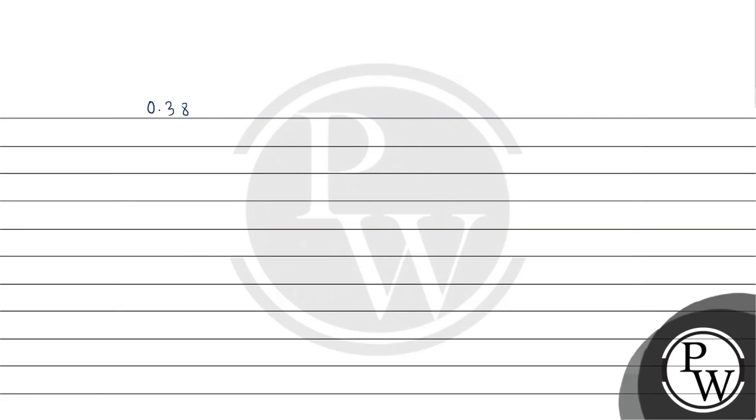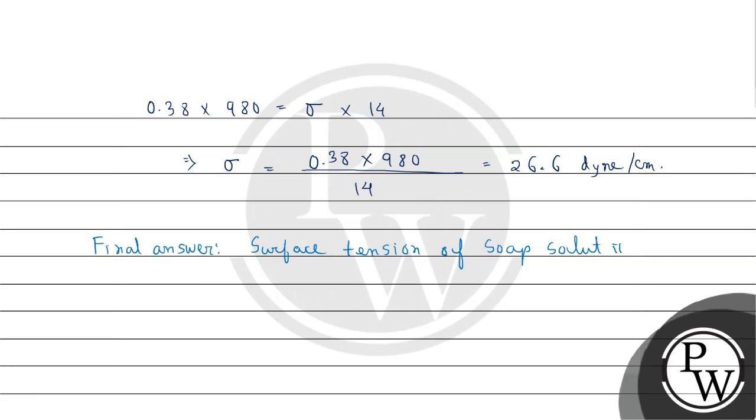So now using the above formula here we can write the value of force is 0.38 multiplied by 980 equals to sigma multiplied by 14. Therefore solving we get the value of surface tension sigma equals to 0.38 multiplied by 980 divided by 14. So surface tension of soap solution is 26.69 dyne per centimeter.